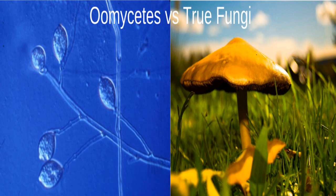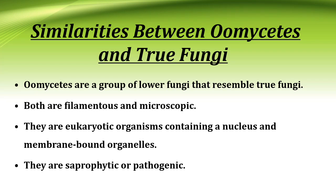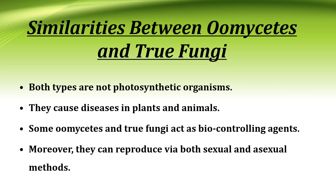Oomycetes versus true fungi — similarities: Oomycetes are a group of lower fungi that resemble true fungi. Both are filamentous and microscopic. They are eukaryotic organisms containing a nucleus and membrane-bound organelles. They are saprophytic or pathogenic. Both types are not photosynthetic organisms. They cause disease in plants and animals. Some oomycetes and true fungi act as biocontrolling agents. Moreover, they can reproduce by both sexual and asexual methods.